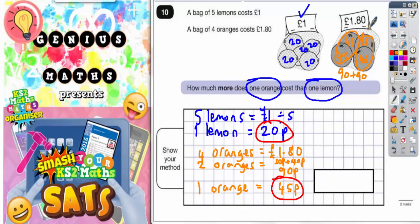90 and 90 would make you £1.80, so the oranges must be 45p. But we still haven't answered the question because it says how much more is one orange, which is 45p, than one lemon, which is 20p.